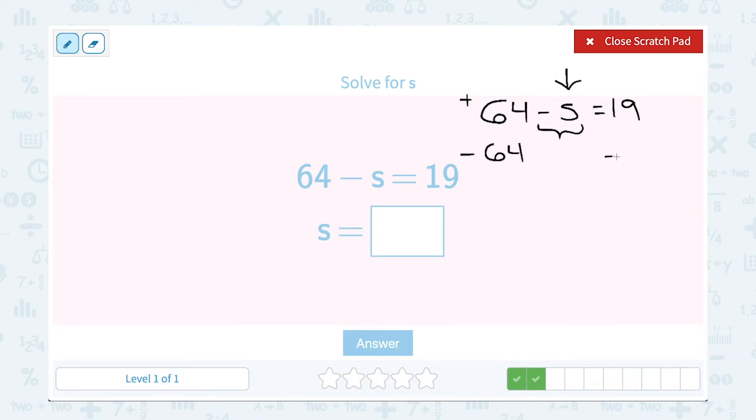If I subtract 64 on the left, of course, I have to do the exact same thing and subtract 64 on the right. 64 minus 64 cancels out. Be really careful when you recopy this. We don't want to just write S because remember that sign is grouped with it. So it's not just an S, it's a negative S. And then on the other side, we need to subtract 19 minus 64. Notice I'm subtracting a bigger number from a smaller number, so my answer is going to be negative. That gives me negative 45.